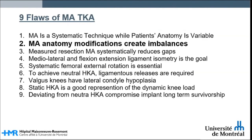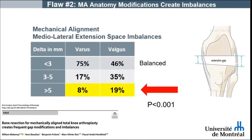Second, mechanical alignment anatomy modifications create imbalances. The medial and lateral gaps in extension are created by the distal femoral and proximal tibial cut orientations and resection levels. Extension space imbalance will result from non-corresponding bone thicknesses on both bones for each compartment.